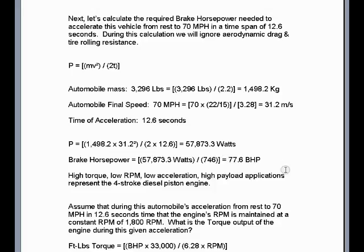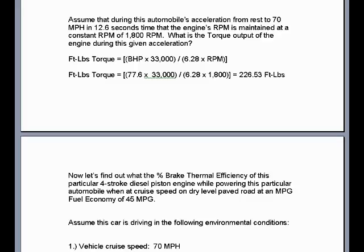Assuming a constant RPM of 1,800 during the acceleration, the torque output of the engine would be brake horsepower times 33,000 divided by 6.28 (2π) times RPM, giving 226.53 foot-pounds — close to its rated foot-pounds torque. This is an ideal RPM reflecting mathematically the time of acceleration relative to its brake horsepower requirements.